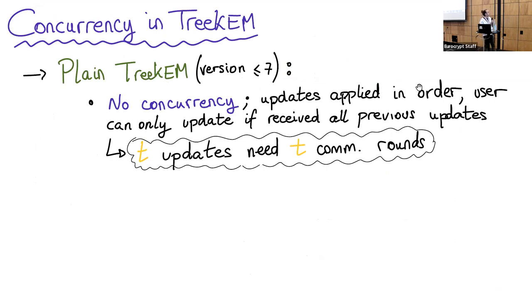With respect to concurrency in TreeKEM, we can differentiate between two versions. Plain TreeKEM corresponds to versions before seven and is not concurrent — updates need to be processed in order. If two users A and B want to update at the same time, one will get their update accepted by the server and the other will be rejected. The one that gets rejected, say B, will need to process A's update and then issue a new update. In particular, if we want T users to rotate their keys, we will need T communication rounds.